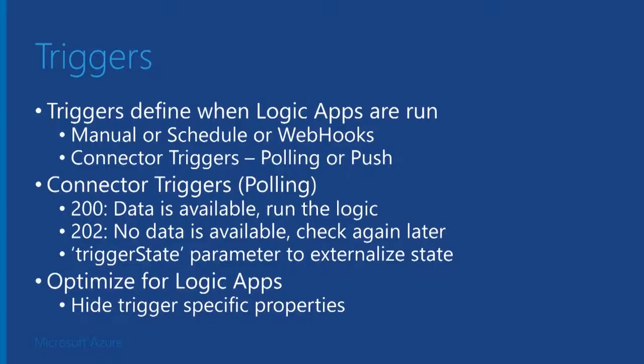When the workflow calls your connector again with the same trigger state, you can retrieve the message ID and pop receipt, and go and delete that message because the workflow has processed it. That is what we are going to do for a trigger.